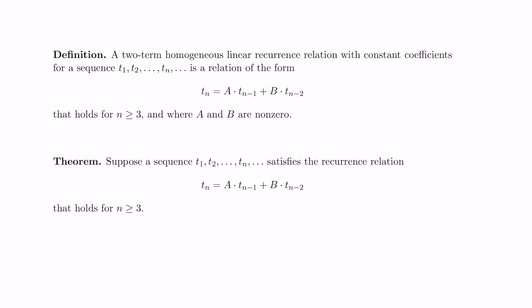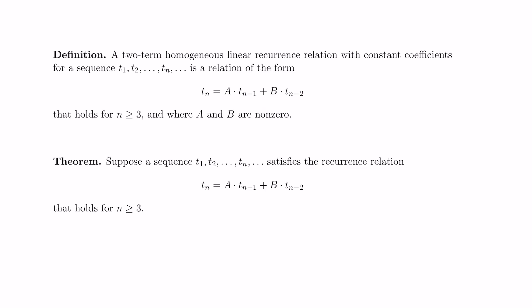What we mean is you have a sequence like t1, t2, up to tn, and it satisfies a recursive equation. The nth term is some constant times the previous term plus another constant times the term before that, no matter what term in the sequence you're looking for.